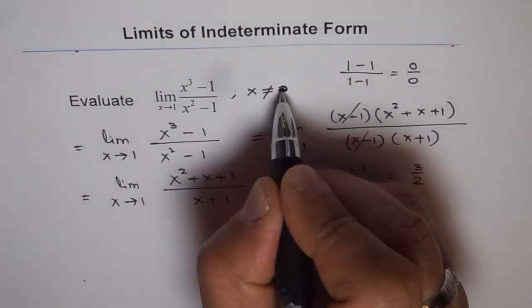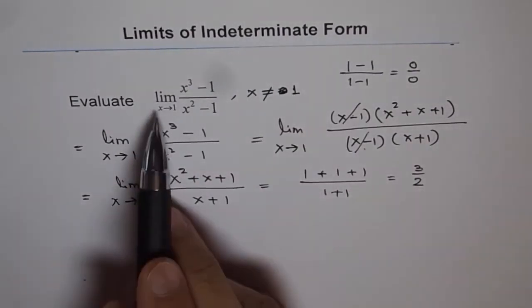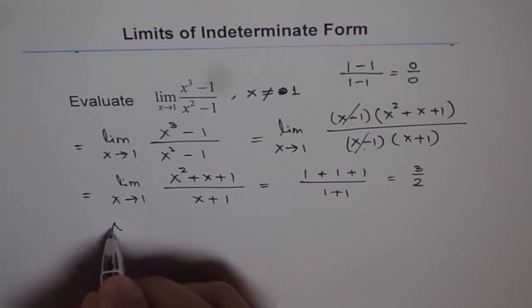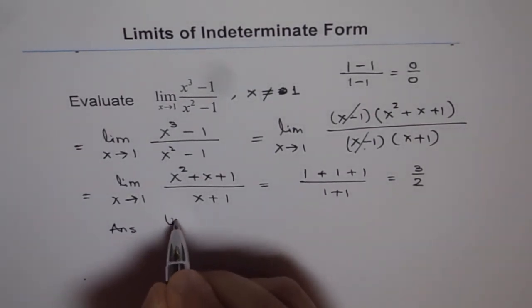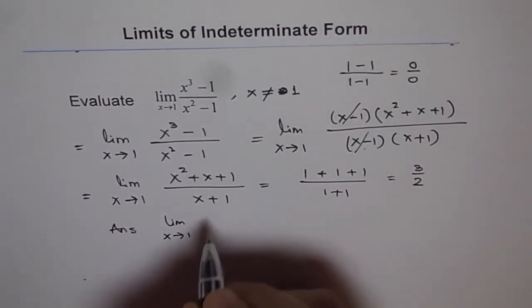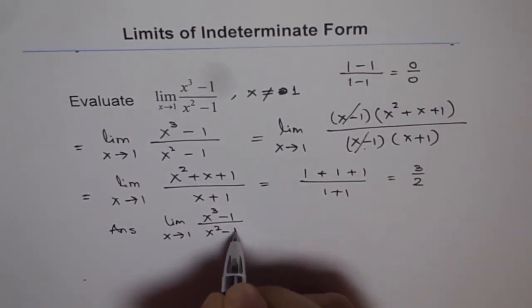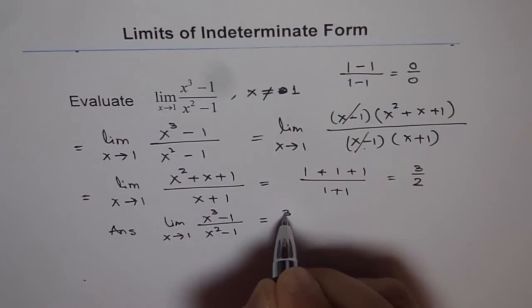Well, I should have written x is not equal to 1. Since 1 gives you 0 over 0. So we get our answer, that is, limit as x approaches 1 for x cube minus 1 over x square minus 1 is equal to 3 over 2.